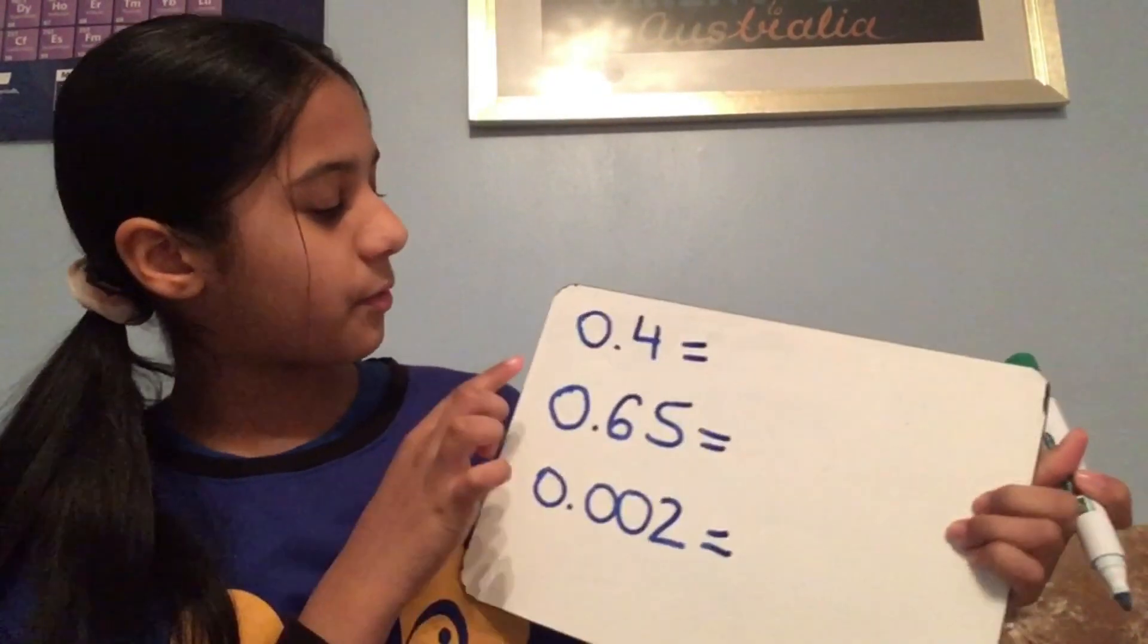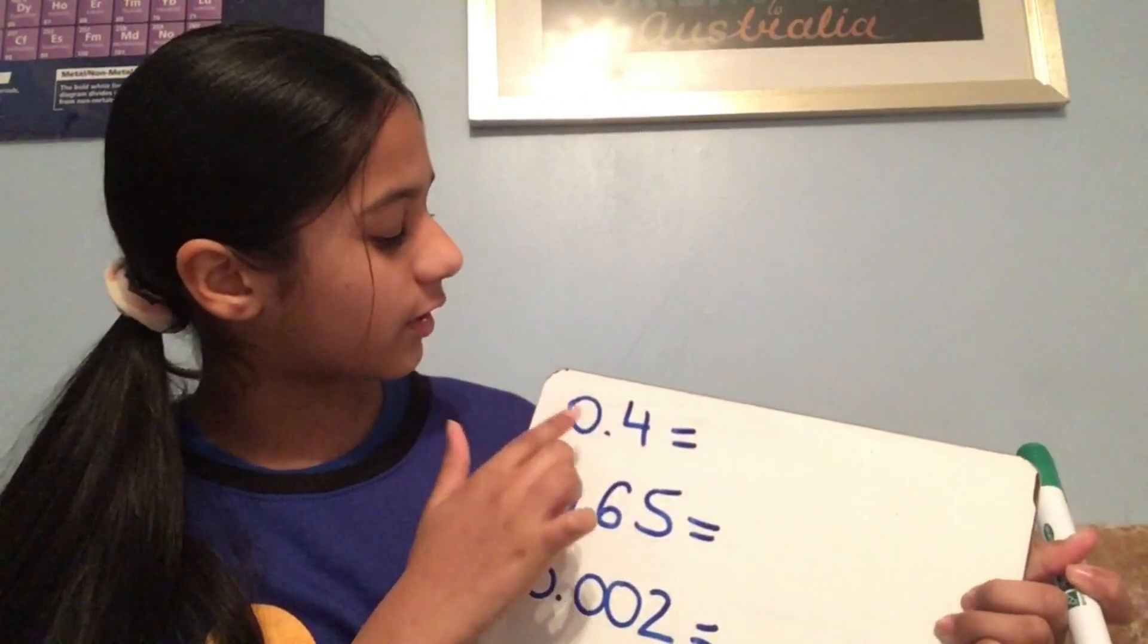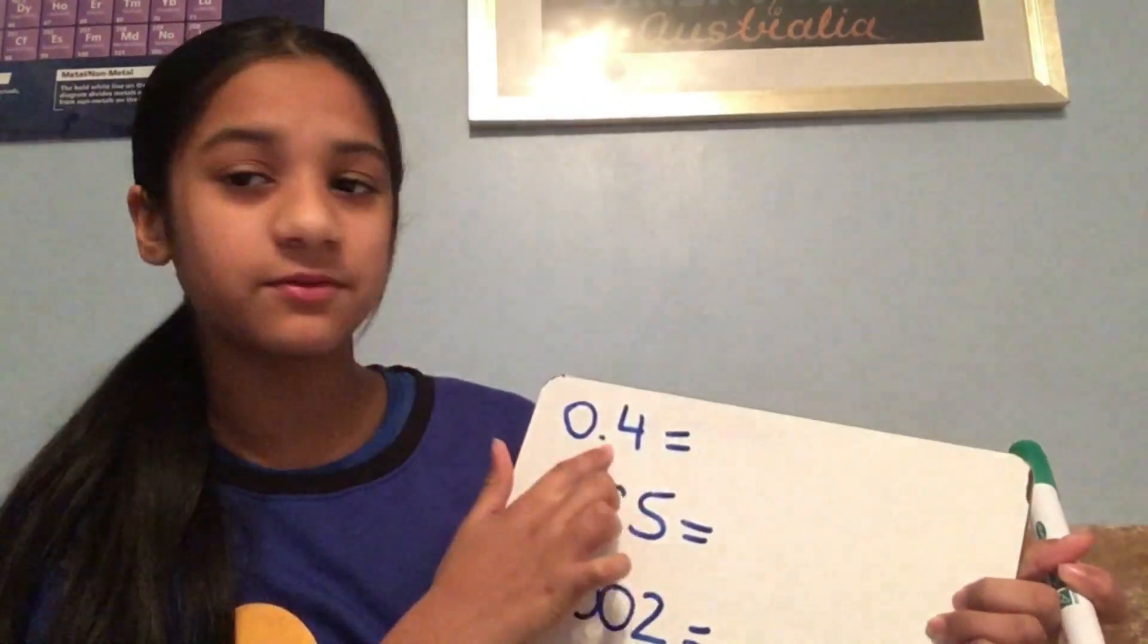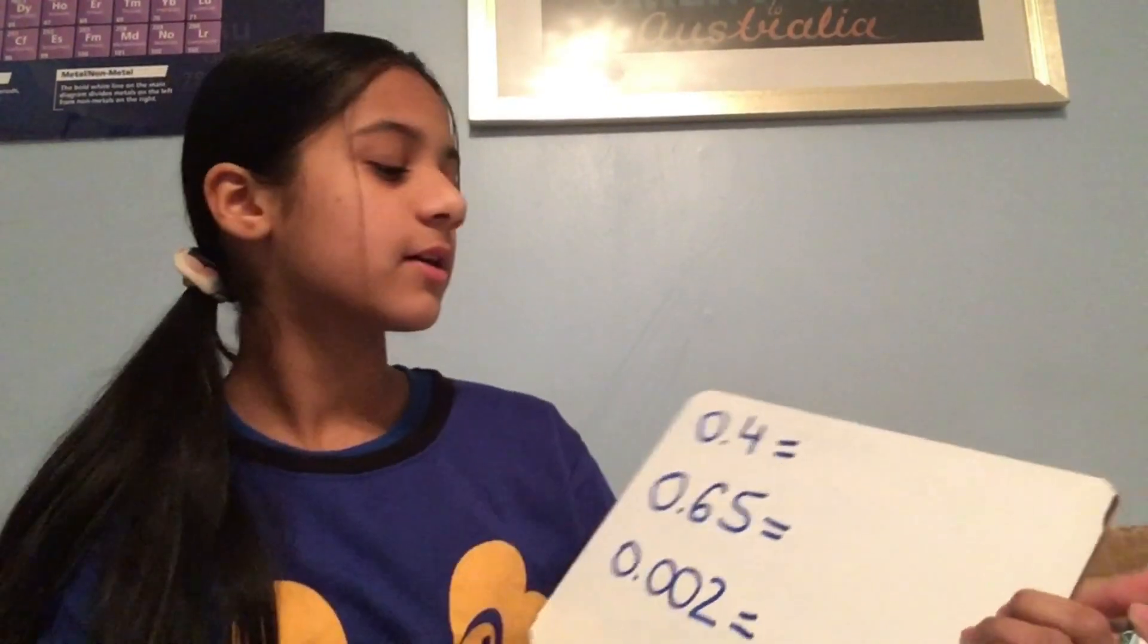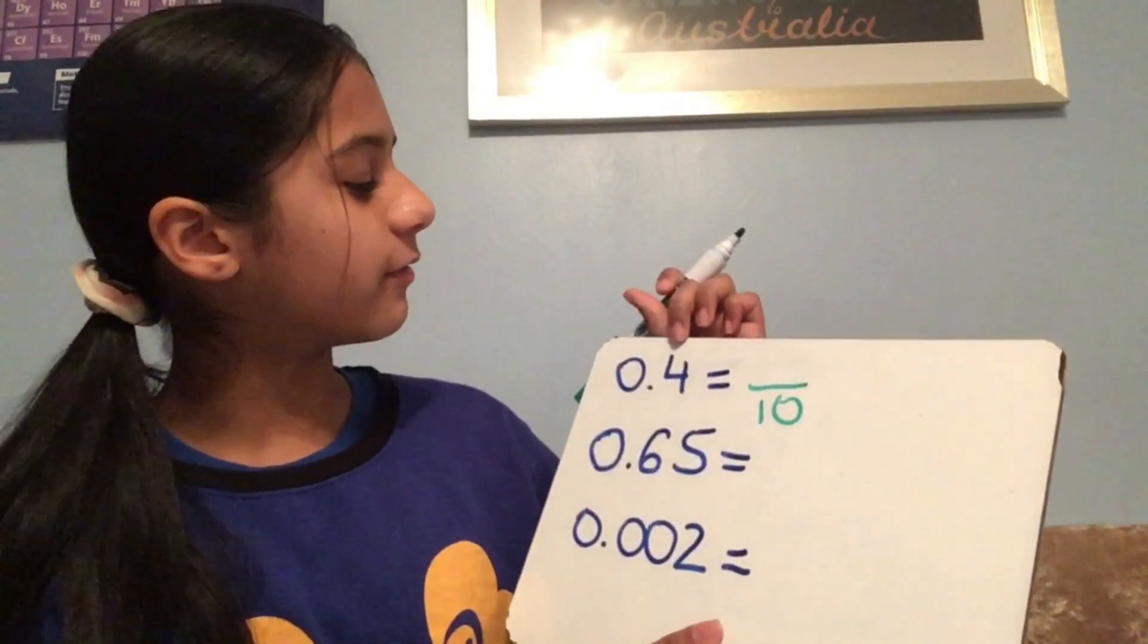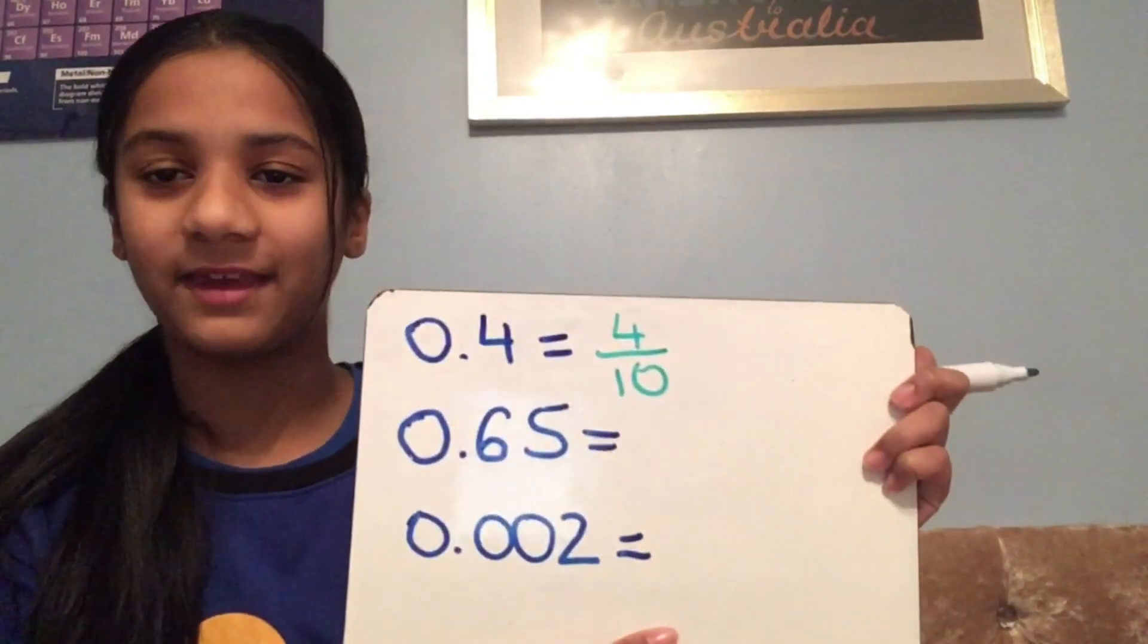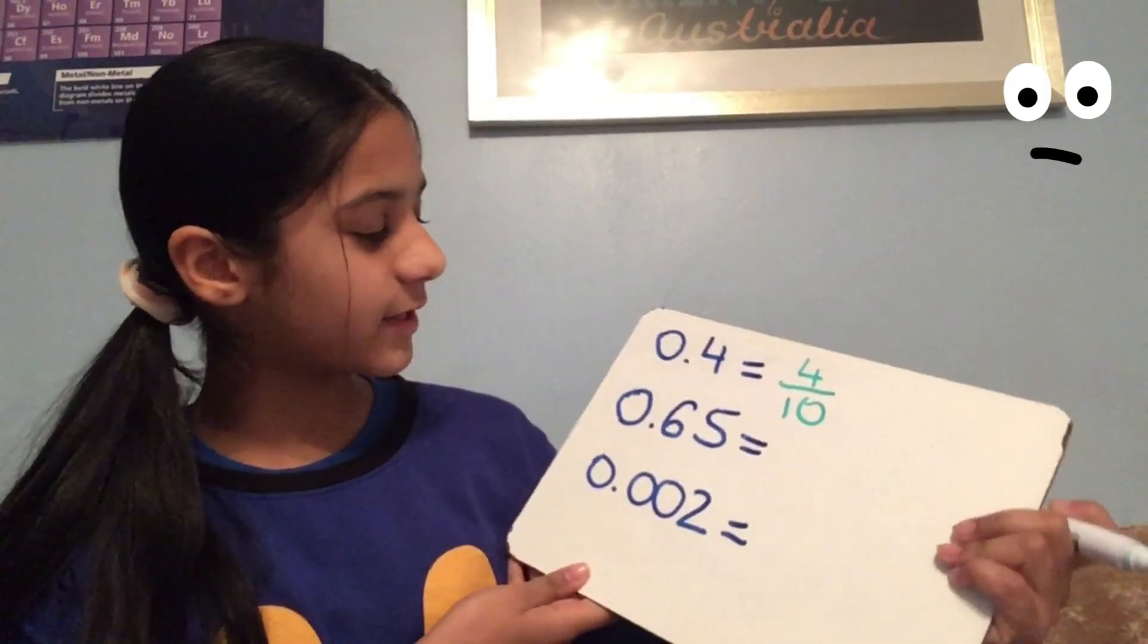Now, it's quite easy. All you need to do is look at the point. The point, there's 4 after the 0, so this is 4 tenths. So, the denominator would be 10, and then the 4 is in the tenths space. So, you just put a 4 like this. It's really easy once you get the hang of it.